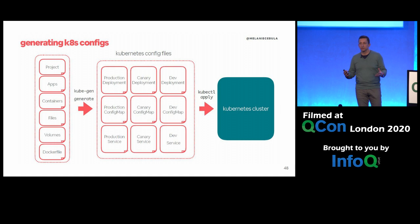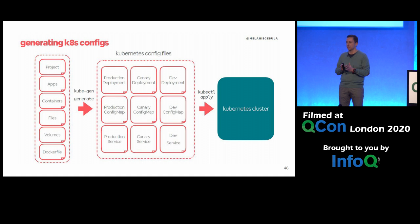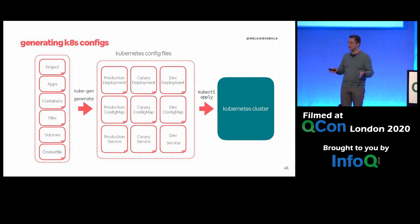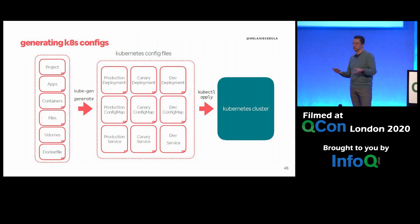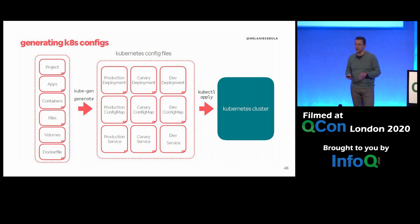What they did was quite simple: they created a simple command-line tool, kubegen, which allows application teams to focus on a smaller set of configuration details specific to their project or services — which files, volumes to mount, Dockerfiles, etc. Just what's specific and more related to the germane aspect of their work. Everything else — the boilerplate configuration — is generated by this command-line tool for different environments: production, canary, and development. This simplifies things and makes it much easier for development teams to focus on the germane part.